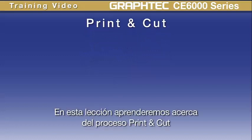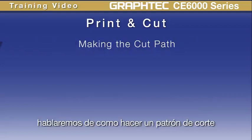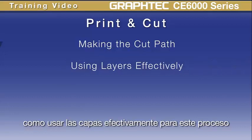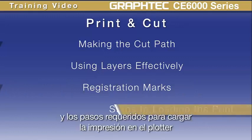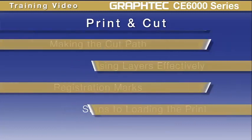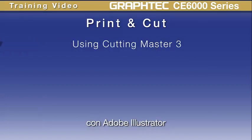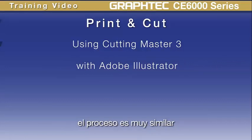We'll learn about the print and cut process — taking a print off your printer and having the CE6000 contour cut around the images on the print for making decals. We'll cover how to make a contour cut path, how to use layers effectively for this process, registration marks, why they are needed and how they are used, and then the steps required to load the print onto the cutter. The software we're going to be using in this lesson is Cutting Master 3 with Adobe Illustrator. While this may not be the software you're using, the process is very similar.